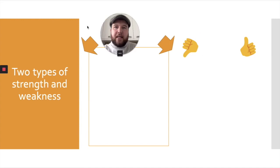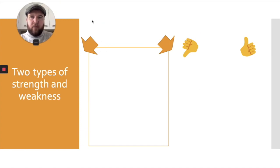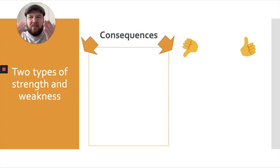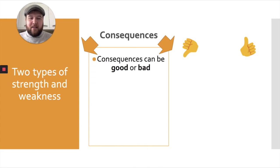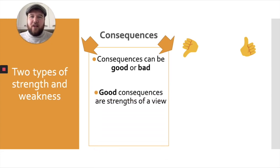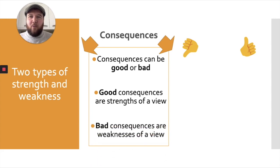So there are two main types of strengths and weaknesses that we look at in RMPS and other academic subjects — just a fancy word really. The first type is consequences. To find strengths and weaknesses — good things and bad things about a viewpoint — in any argument we look at consequences. Consequences can be good or bad. Consequences just mean something that happens after something because of something else. Good consequences are a strength of a view and bad consequences are a weakness of a view.